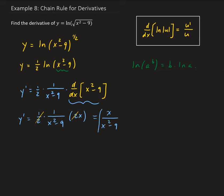So we're going to get x over x squared minus 9. So this is the derivative of our function.